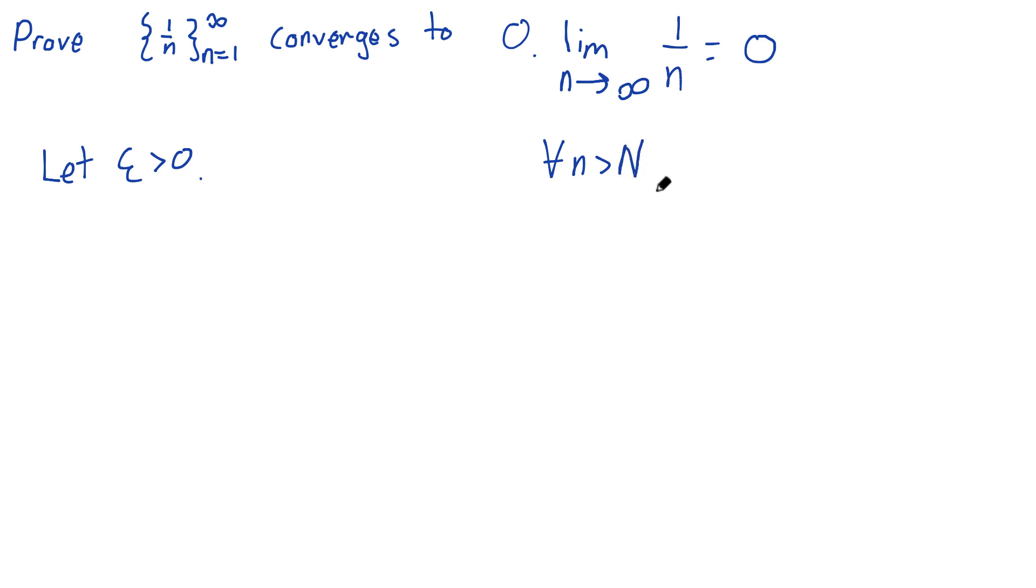The absolute value of the sequence, 1 over n, and its limit, 0, is less than epsilon. I want stuff less than epsilon. That's what I want to show. And so the way I do this is I just start working with this.